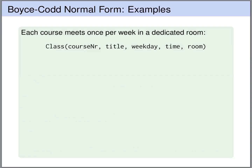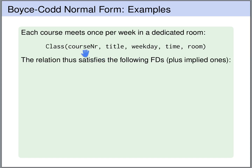Let's have a look at another example. Here we have a table for courses that meet once per week in a dedicated room — a table called class. There is a course number, a title, and for the meeting: a weekday, a time, and the room. What are the functional dependencies we would expect? If courses only meet once per week, then the course number uniquely determines the weekday, the time, and the room — and also the title. Moreover, the weekday, time, and room together are enough to identify what course we are talking about.